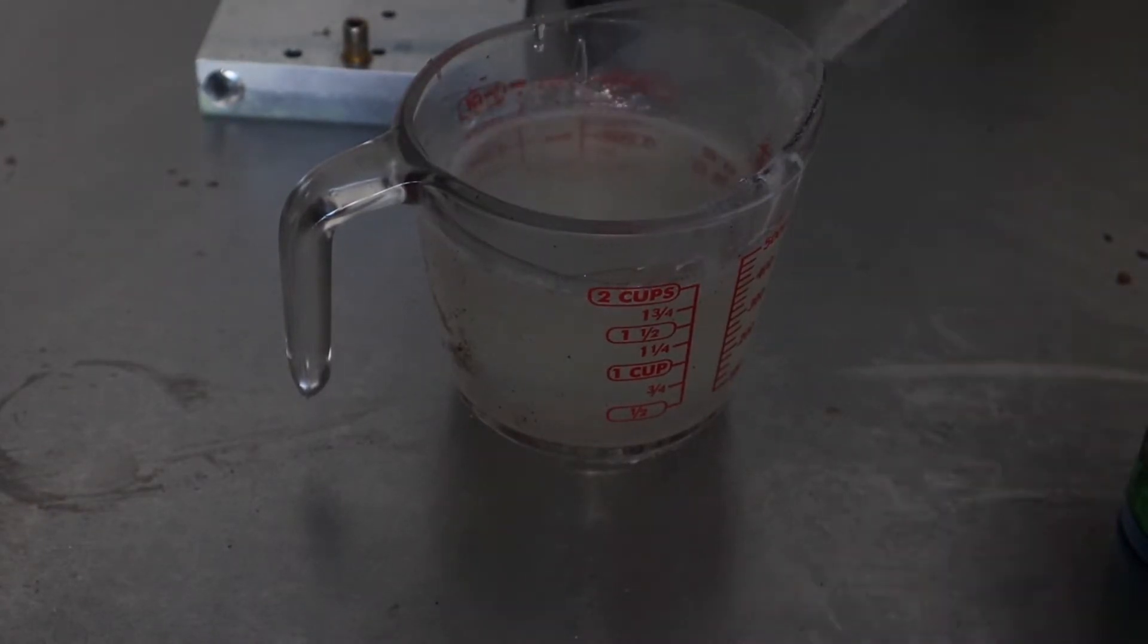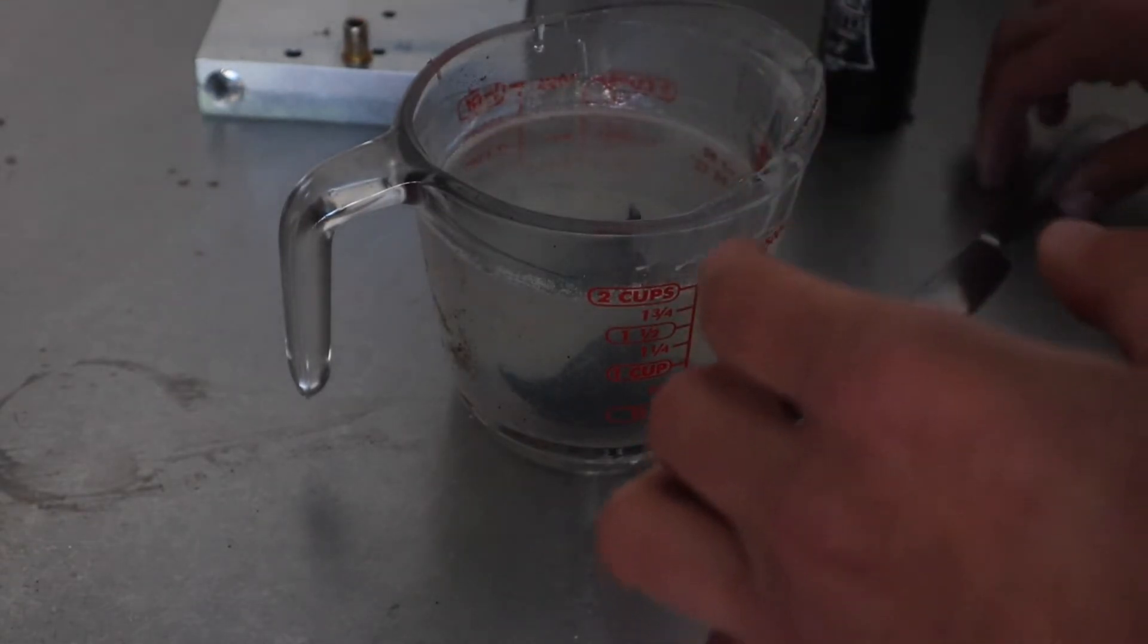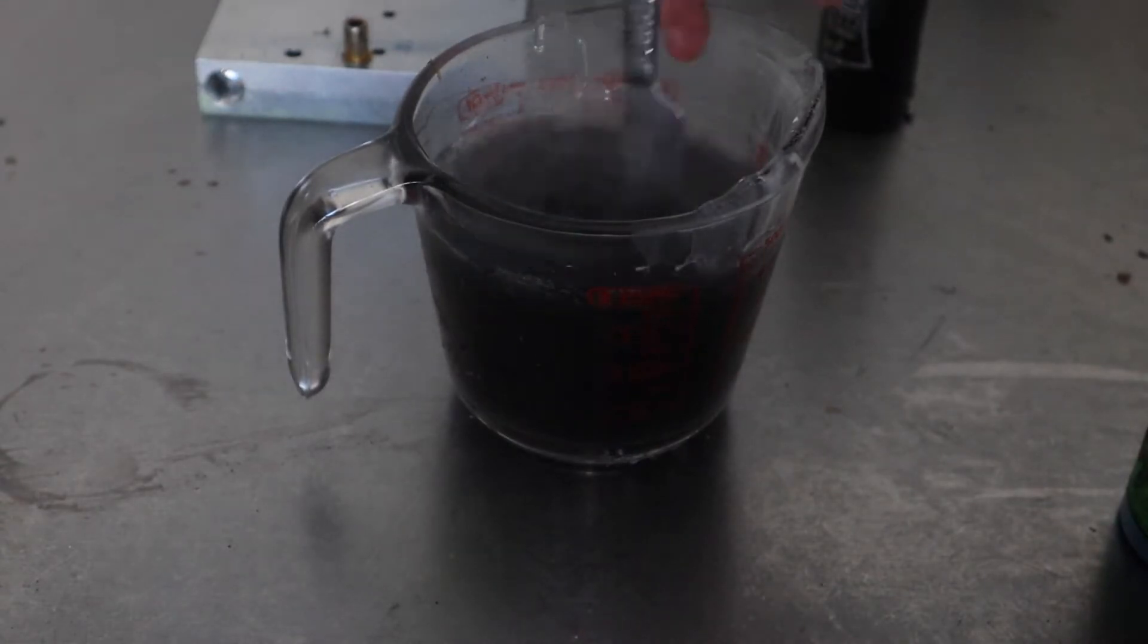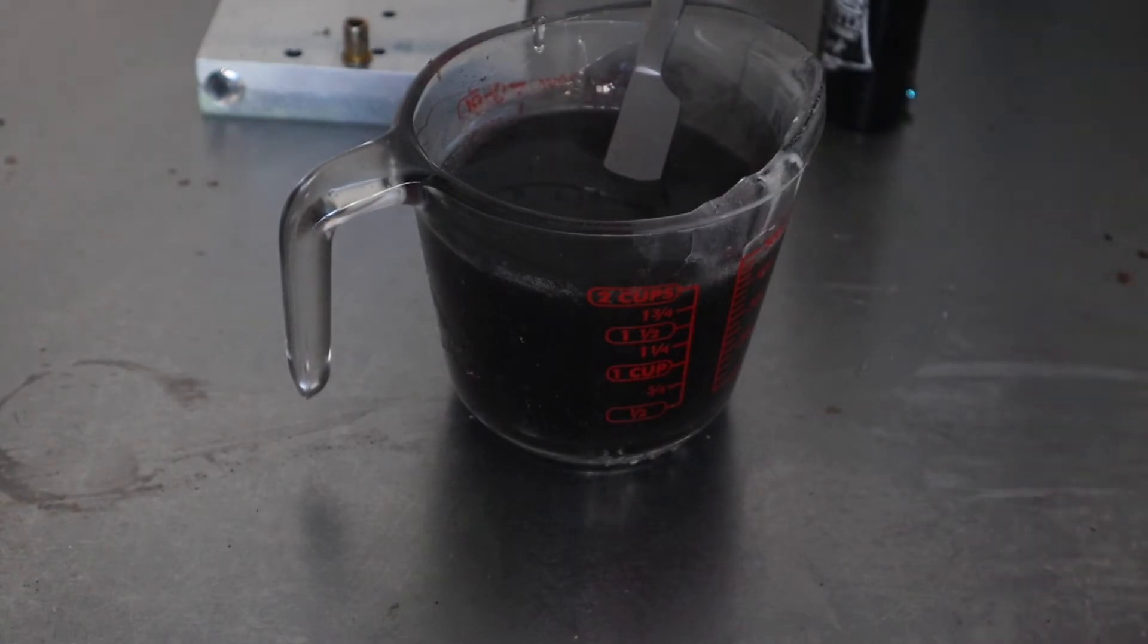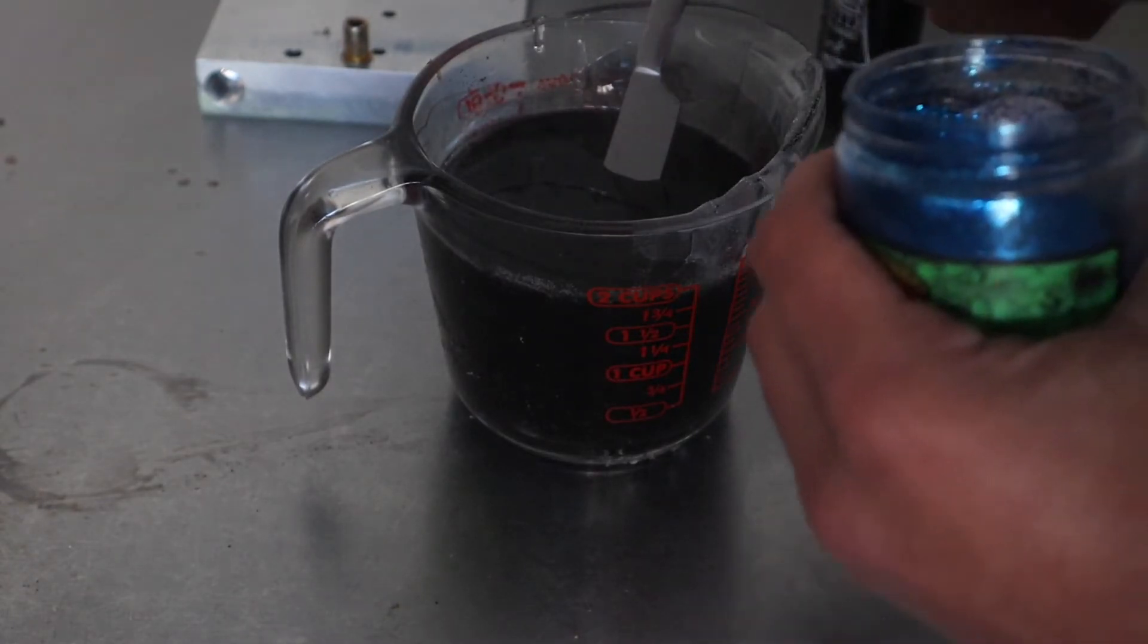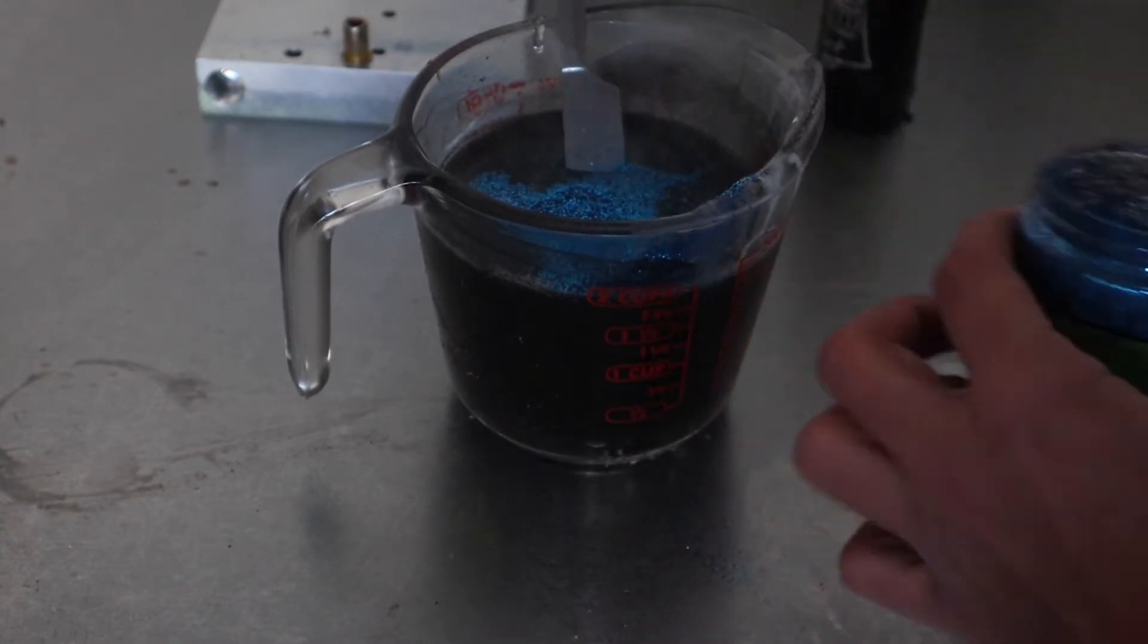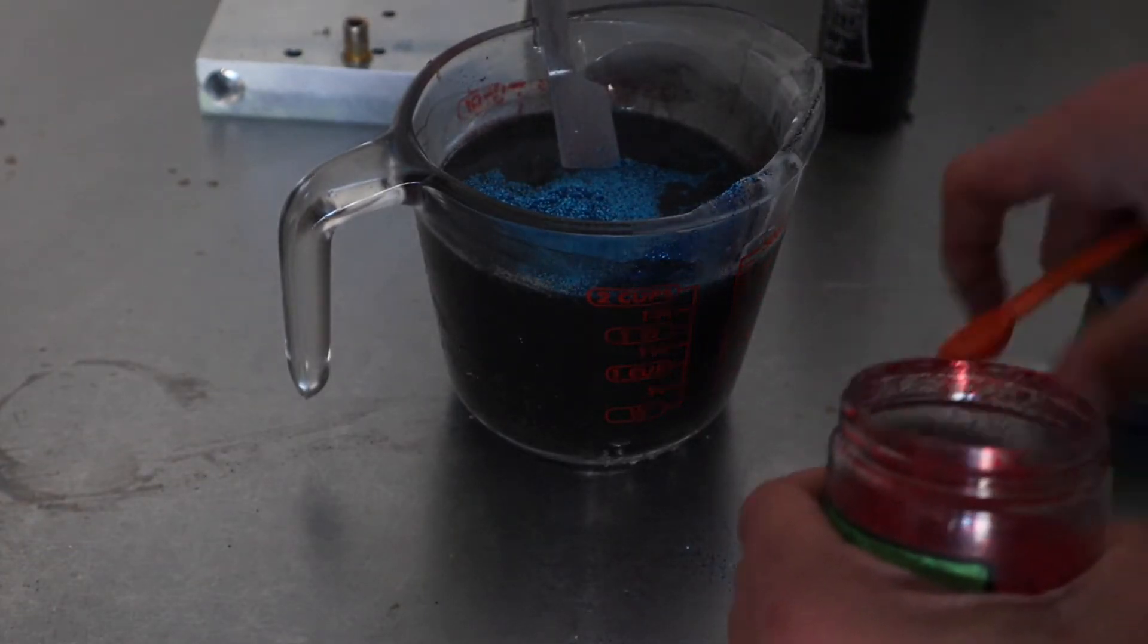Okay, so we are back. We've got our plastic all cooked up here. Now I'm going to put in our coloring and our flakes. So there's our black color. All right, now it's time for our flakes. We got blue.